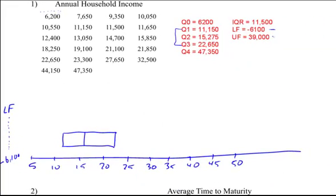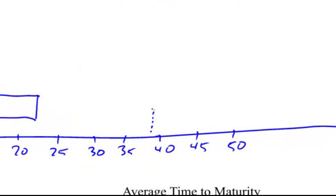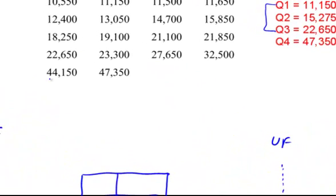My upper fence is at $3,900. So $3,900. There's my upper fence. And $3,900 in my data set is $3,244. So it's going to be about right here.